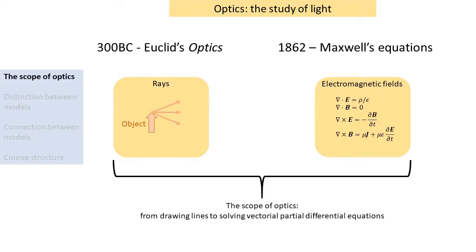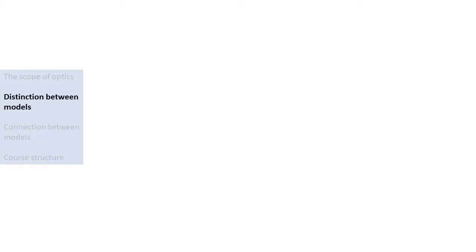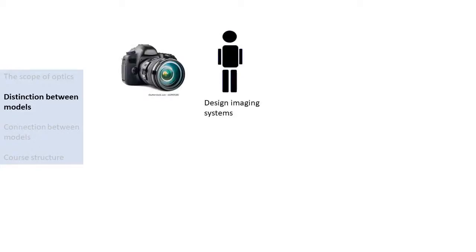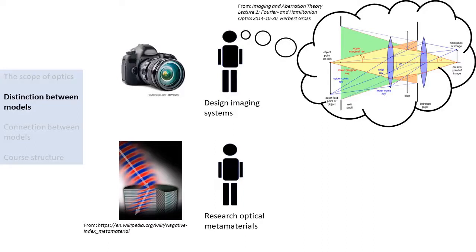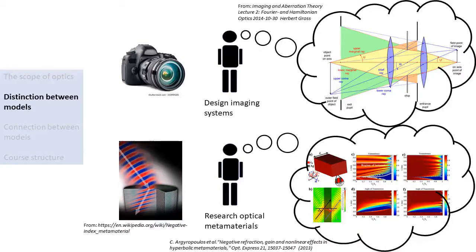In one you draw rays, calculate their angles, and see where they intersect. The other involves solving a set of four coupled partial differential equations. These two aspects of optics look very different and have different applications. If you're going to design optical imaging systems such as cameras, microscopes, or telescopes, you're usually going to think in terms of rays, and you don't really care much for solving Maxwell's equations. If, however, you're going to research metamaterials with unusual optical properties, then you'd probably care less about ray tracing, and you're more concerned with numerically solving Maxwell's equations to find out how light interacts with matter at the microscopic level. So in that sense, you could argue that these two aspects of optics are separate fields of study, each with their own applications.